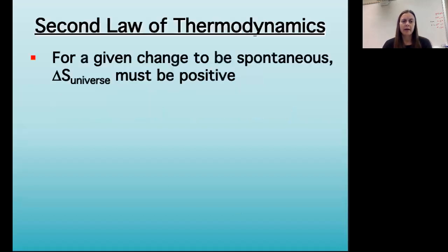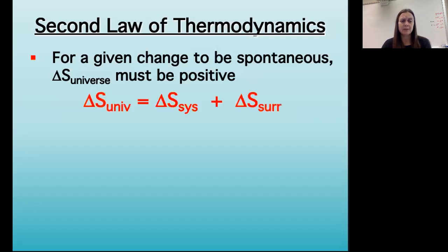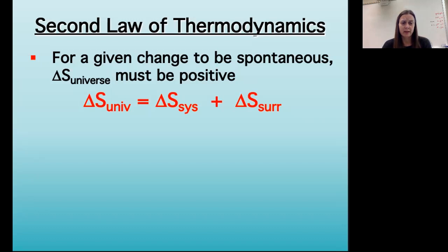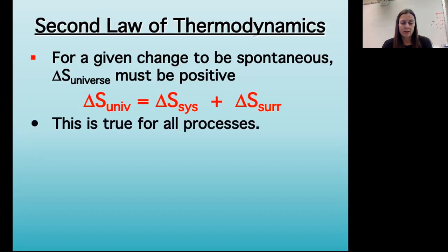Just a quick reminder that according to the second law of thermodynamics, for a change to be spontaneous or thermodynamically favored, the entropy change of the universe has to be positive. We have a couple of ways to get a positive change in the entropy of the universe. If both the entropy of the system and the entropy of the surroundings are positive, then obviously the entropy change of the universe is positive. Or if there's a significant enough change in the entropy of the system, that might be enough to overcome a negative change in entropy of the surroundings. As long as the entropy of the universe is increasing, we have a thermodynamically favorable reaction — true for all processes, physical or chemical.